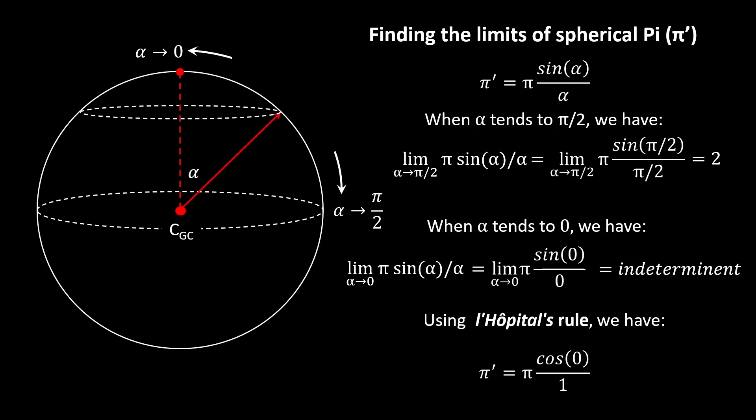...is π times cos(0), which is 1, divided by 1, or simply π. So now we've defined the boundaries of it: spherical pi lies between a value of 2.0 and π. I wonder if anybody else knows about this.